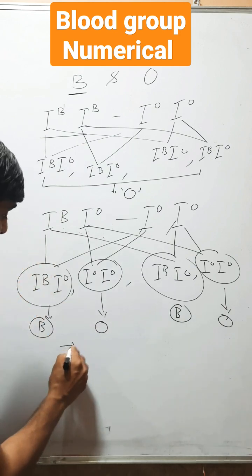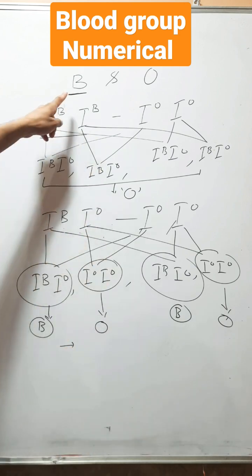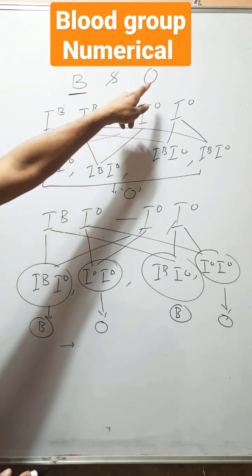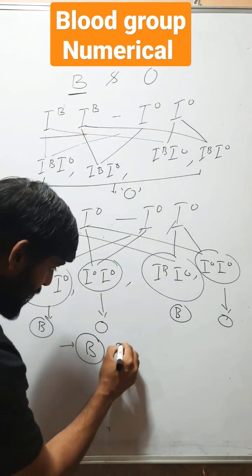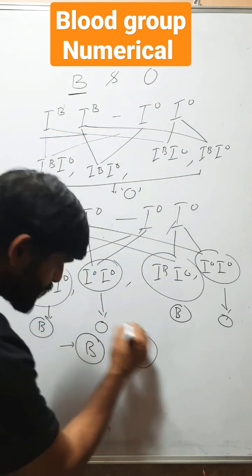So overall, we can see that when one parent is with B blood group and another is O blood group, then in their children, blood group may be B and O.